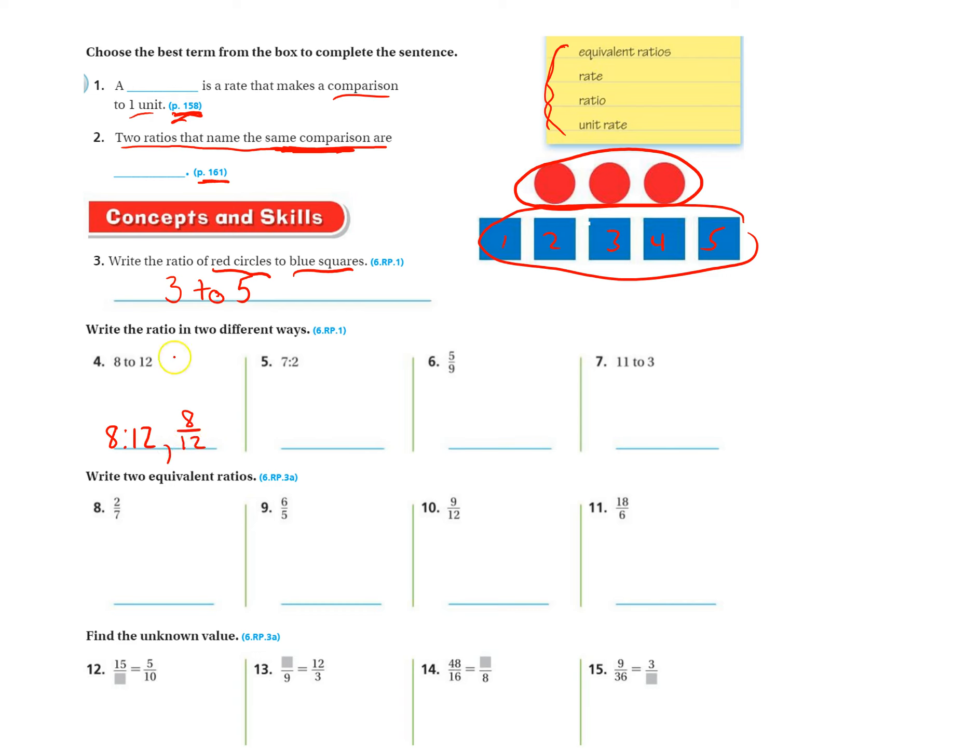So these are the three different ways that you write each ratio. So if they use the colon, you're going to write it this way and this way. If they use the fraction, you're going to write it this way and this way, and so on.